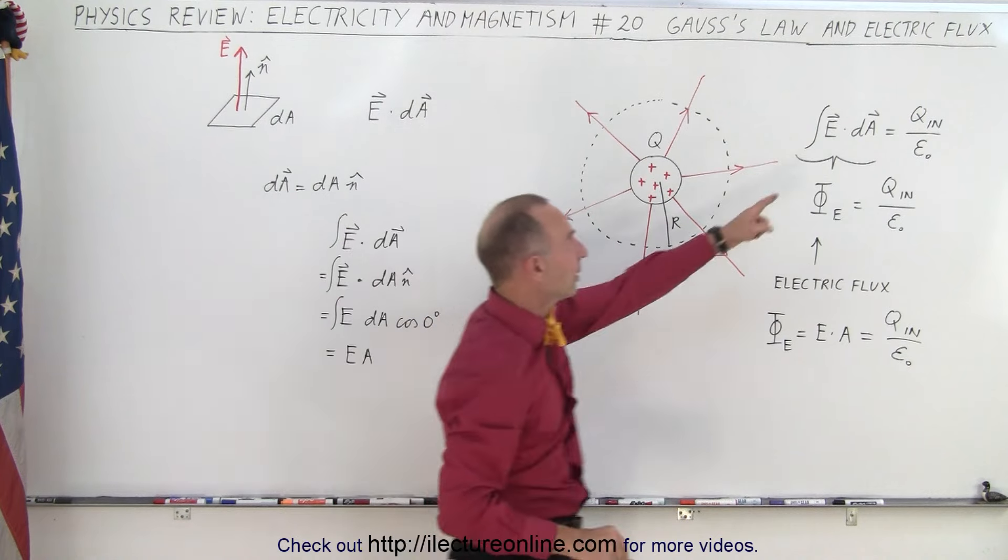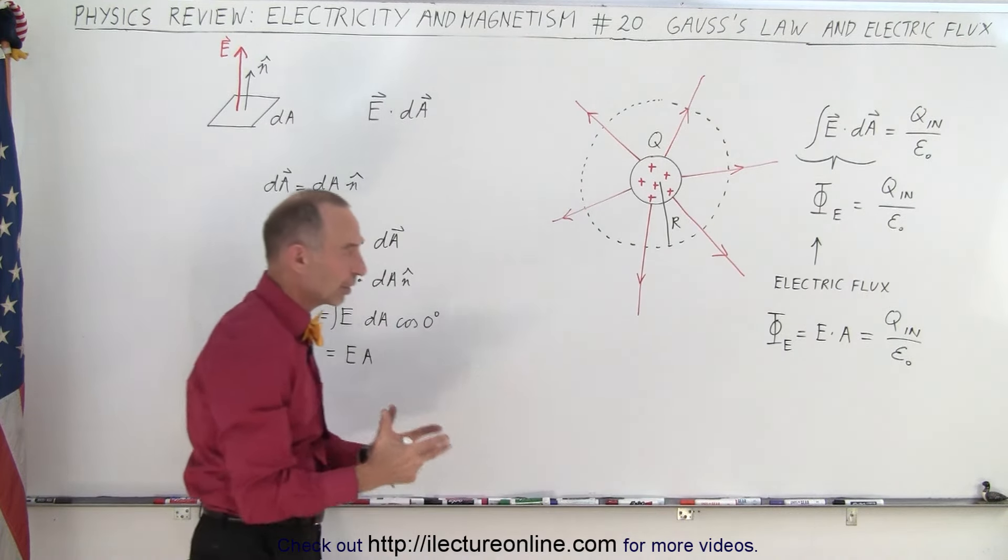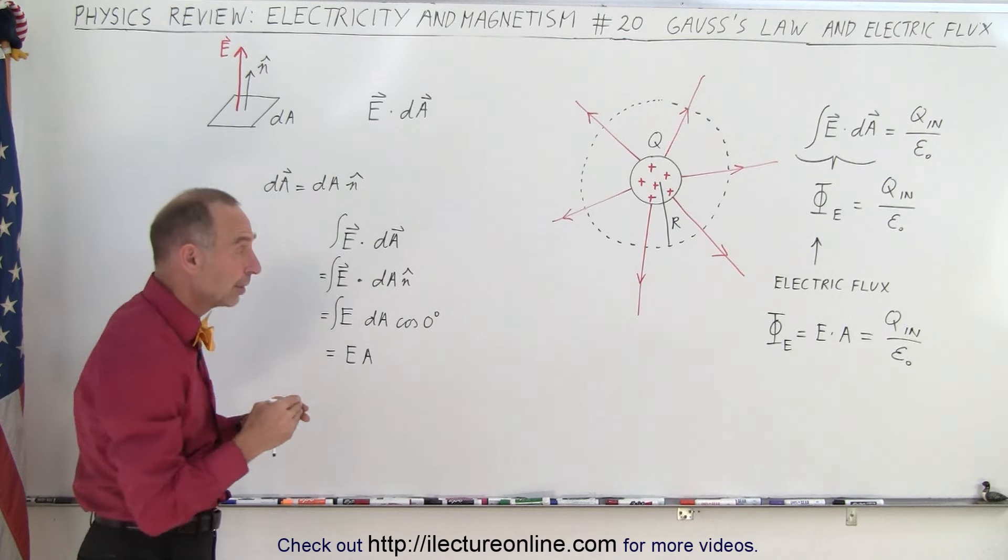That's why we can write this equal to this. It's one and the same because the Gaussian surface is always going to be perpendicular to the electric field. That's why that's important.